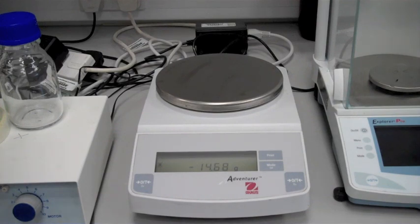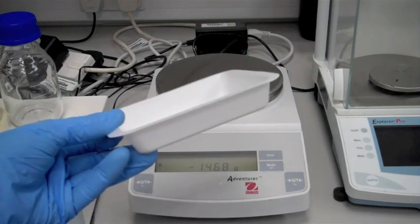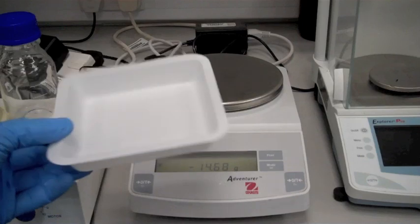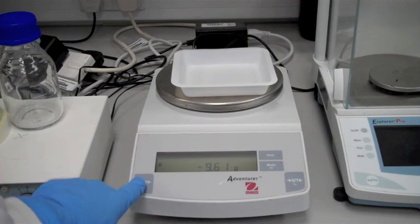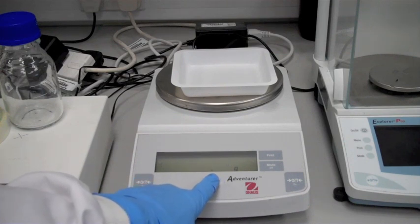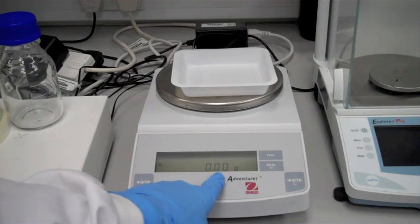Okay, to weigh out, what you need to do is take a clean weighing boat and place it on the scales. Then press the tar button, which is the one down on the bottom there. This should set the reading to zero. See there? Zero, zero, zero.